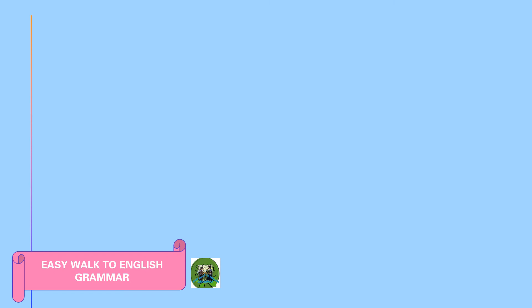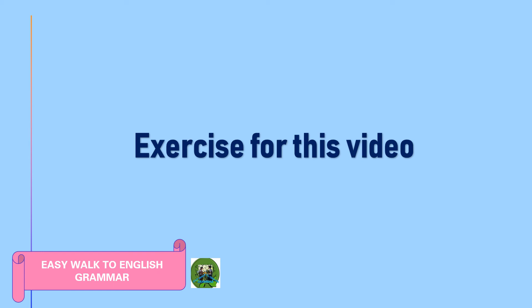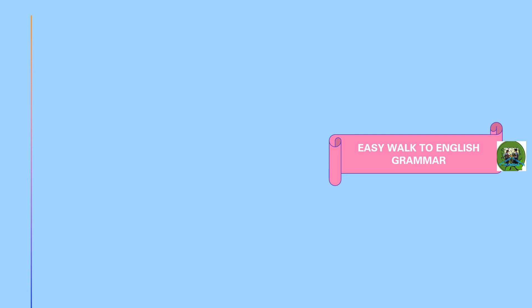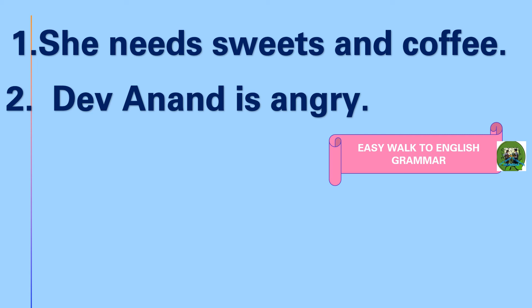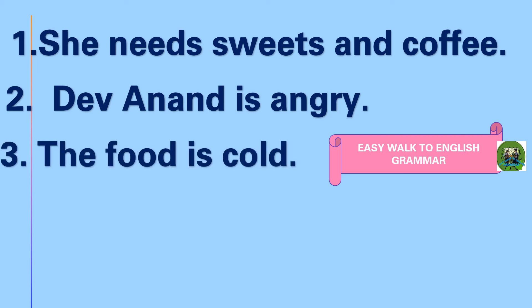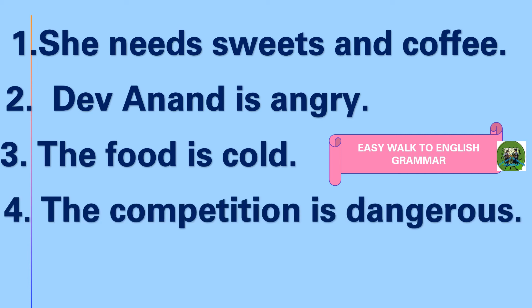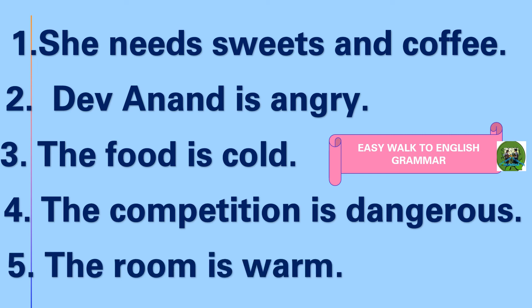Now we can move on to the exercise section. You can see some sentences on the screen: first, 'She needs sweets and coffee'; second, 'Dev Anand is angry'; third, 'The food is cold'; fourth, 'The competition is dangerous'; fifth, 'The room is warm.' What you have to do is add any adverb of degree that suits each of these sentences and notice the wonderful change it brings.